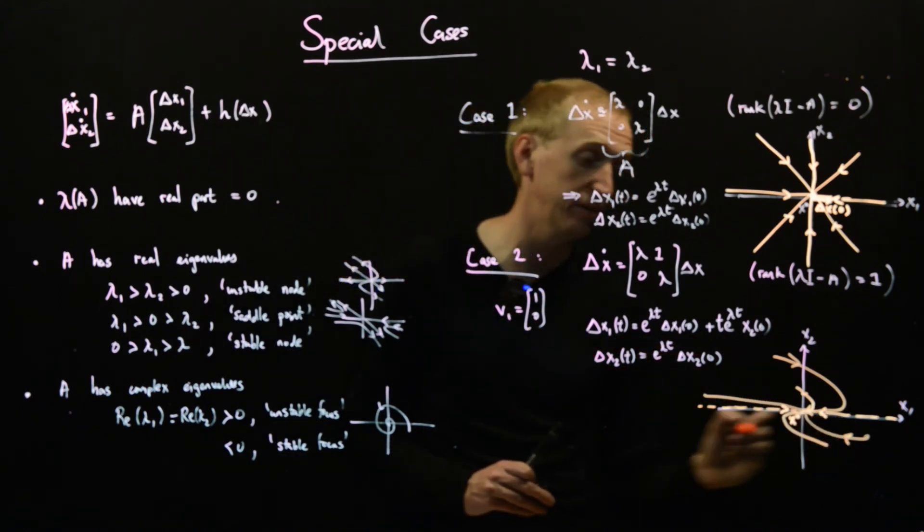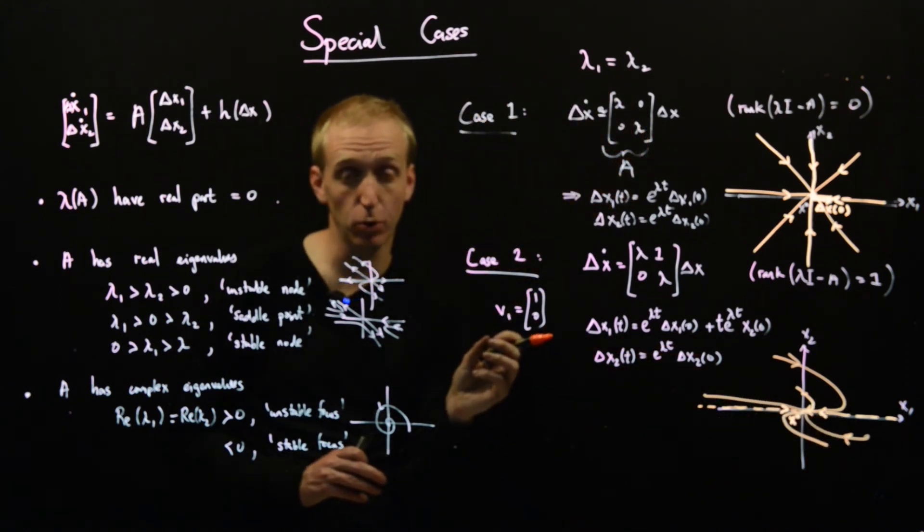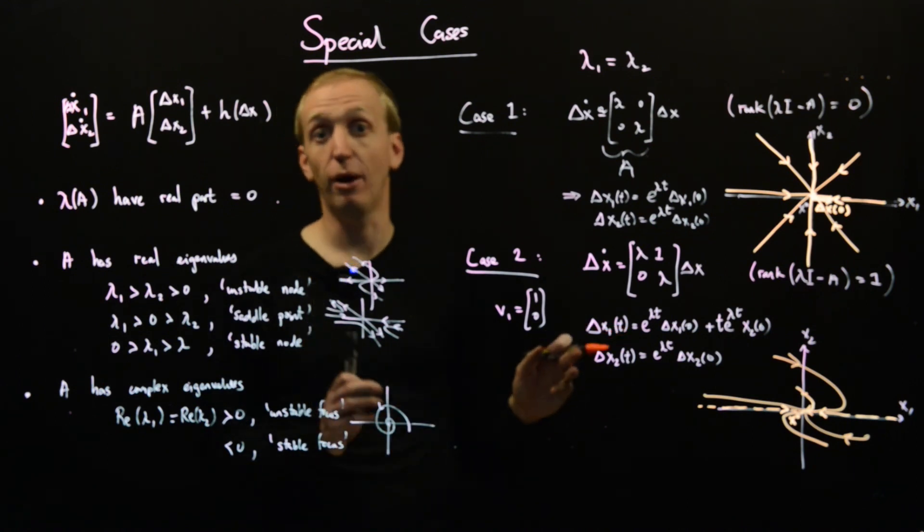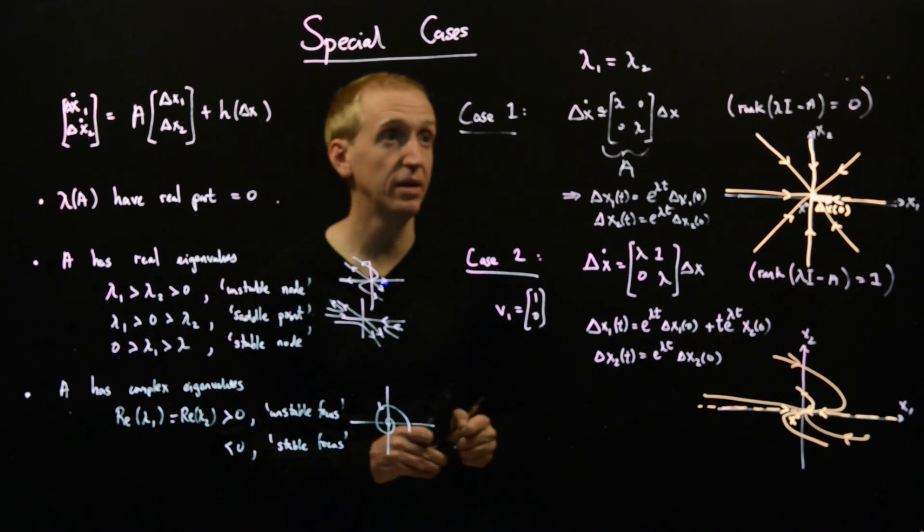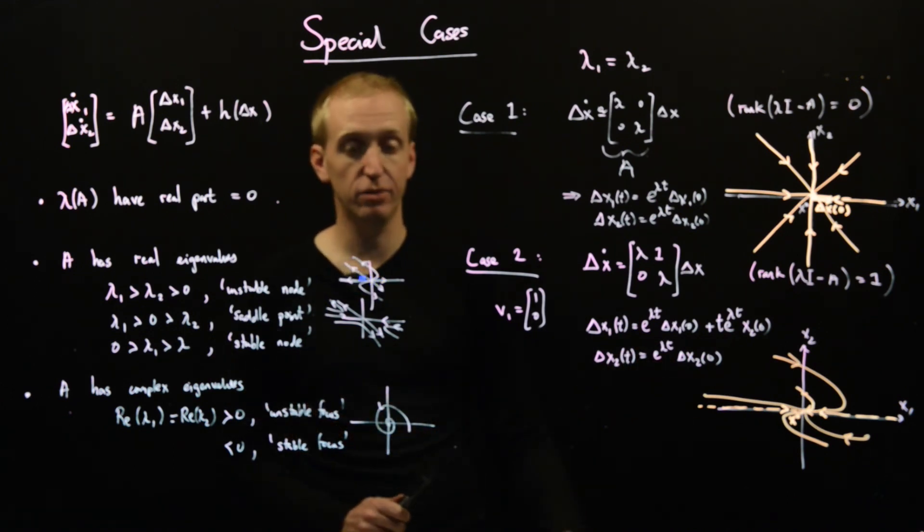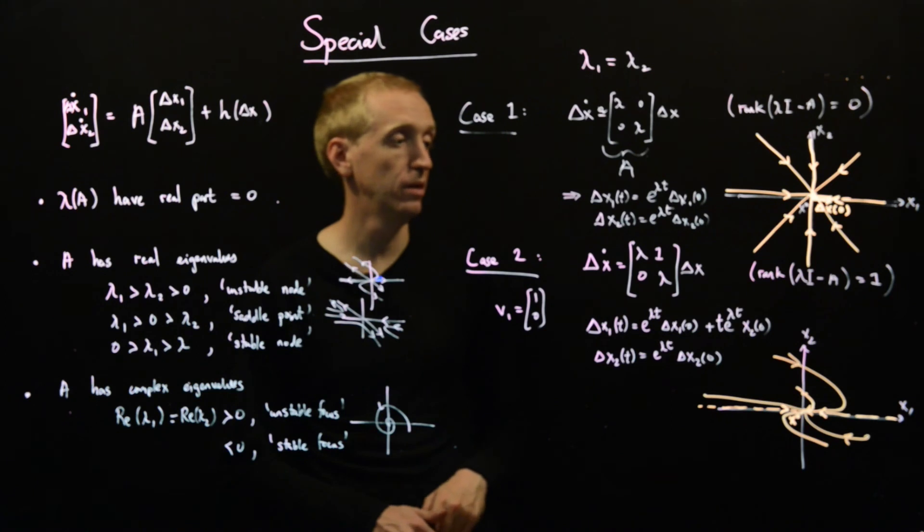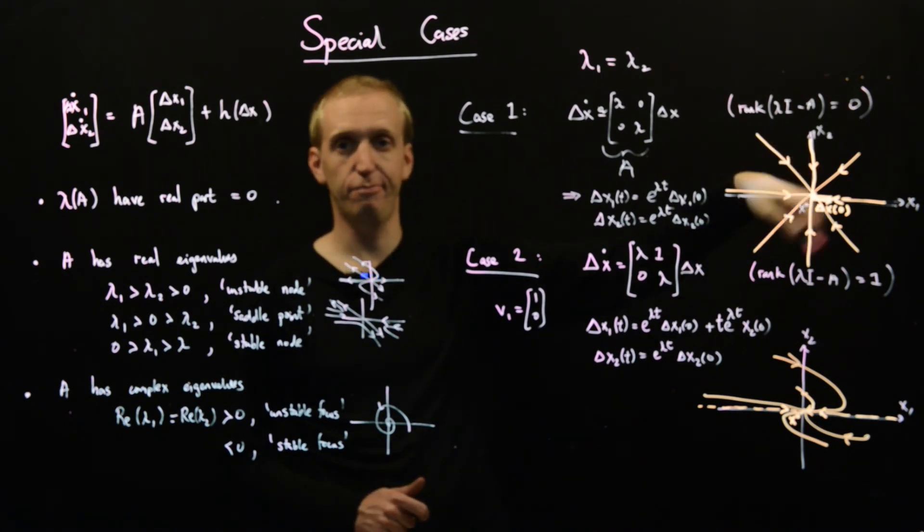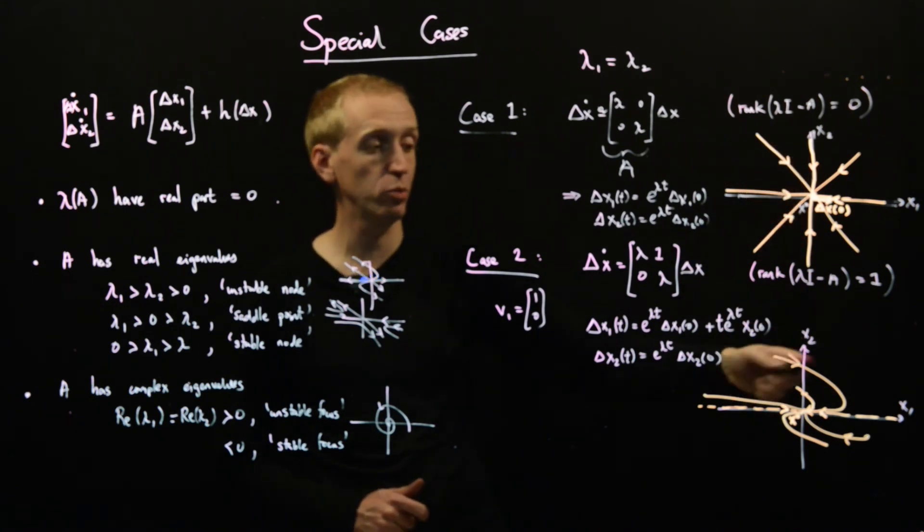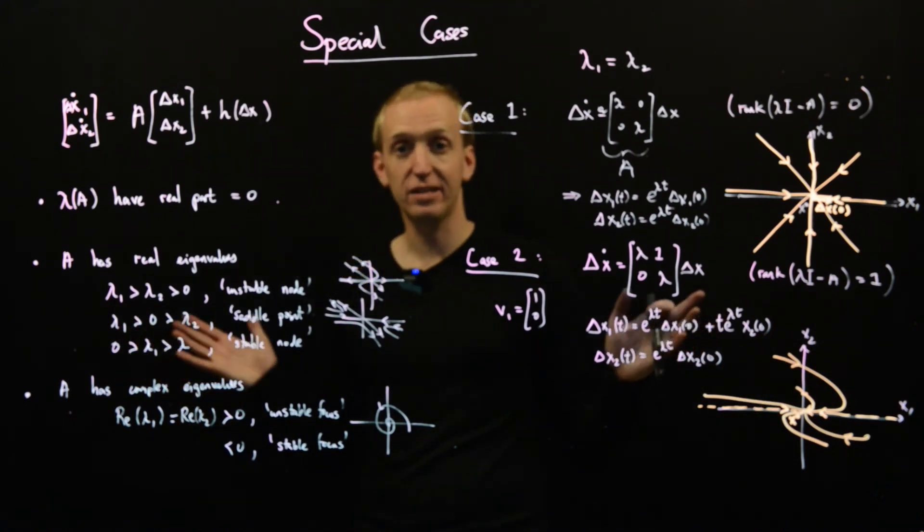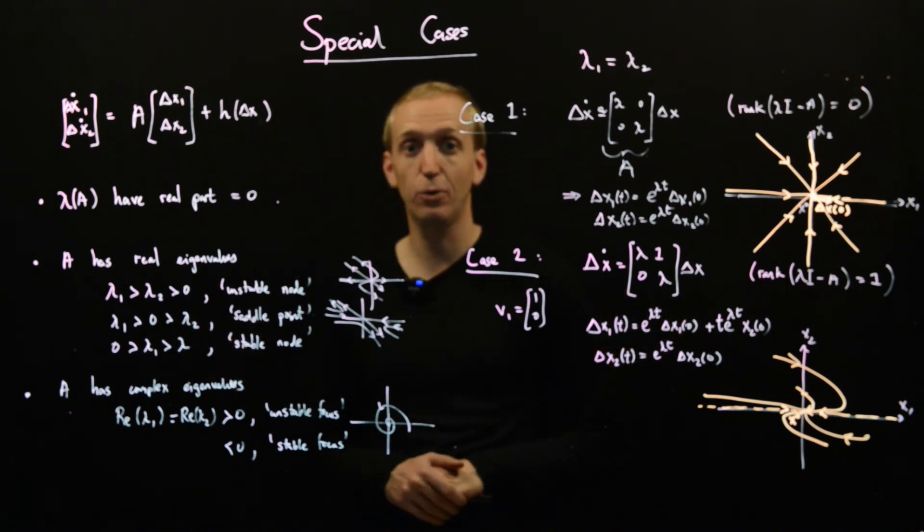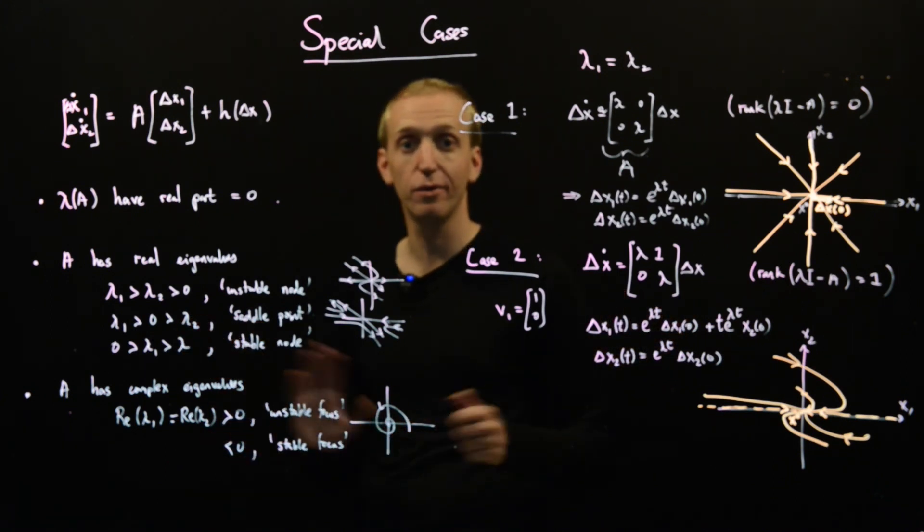And other than that, everything is the same. In fact, if we made an arbitrarily small perturbation, another eigenvector would appear and we'd be back in our usual node case. So this is what we have, what we get when we have repeated eigenvalues. So we either have this kind of perfect node behavior or we get this weird behavior when there's only one eigenvector. And now we've completed our classification of equilibrium points in 2D based on linearizations.